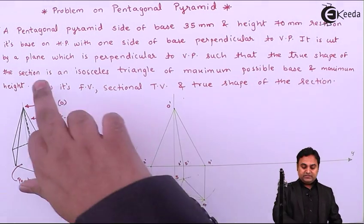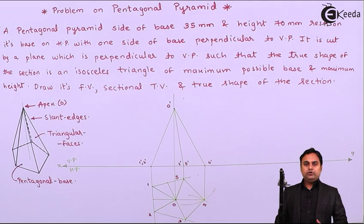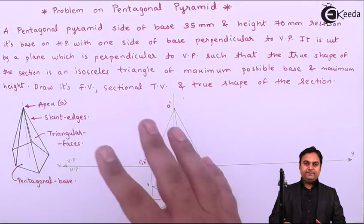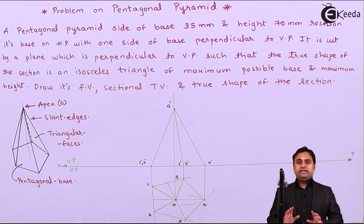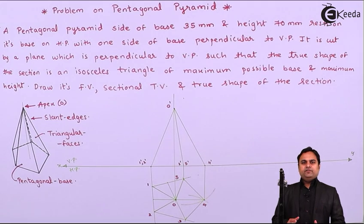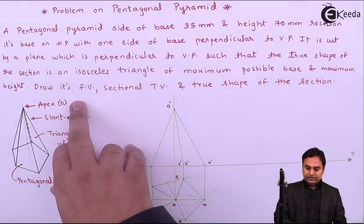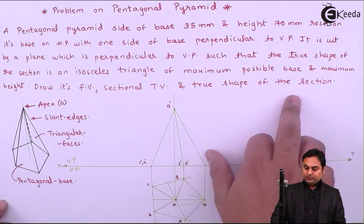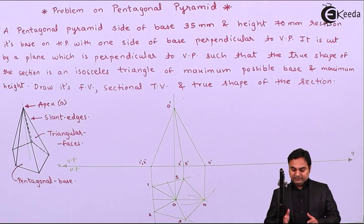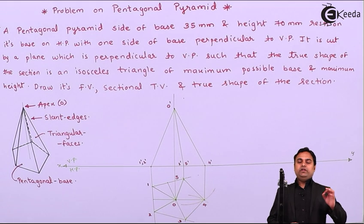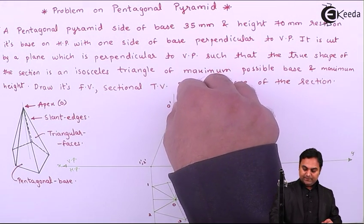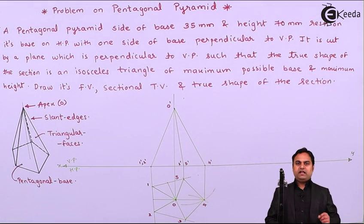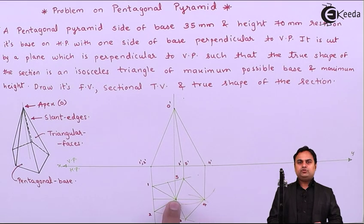It is cut by a plane which is perpendicular to VP such that the true shape of the section is an isosceles triangle of maximum possible base and maximum height. The dimensions are not given, but the hint is given in the form of maximum base and height. When we are trying to cut this pyramid to get a triangle, at least one point of the cutting plane must pass through the apex. Looking at the top view, connecting points 3 and 5 gives the maximum possible distance on the top view — that is from 3 to 5.